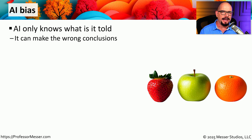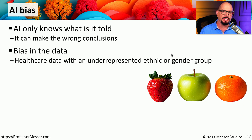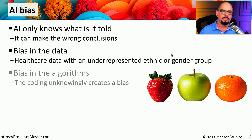One of the challenges we have when working with AI is that it can sometimes have a bias. The AI only knows the information that we're feeding into it, and it has a predefined set of algorithms on how to manage that data. Sometimes AI can make the wrong conclusions based on this combination of data and algorithms. For example, we may be feeding AI a very large data set associated with healthcare in the United States, but inside of that data set we may have underrepresented statistics for a particular ethnic group or gender group, and AI could potentially create conclusions that are biased one way or the other.